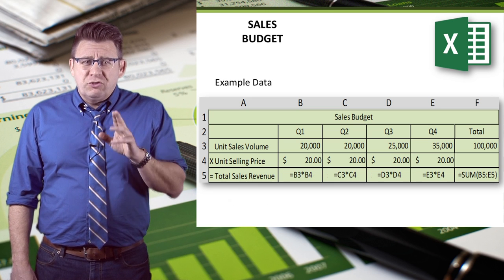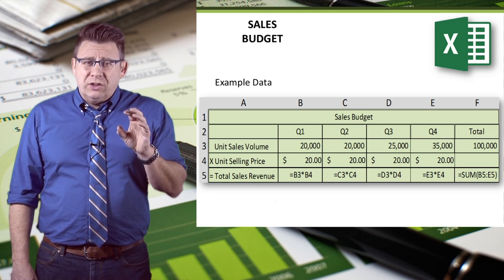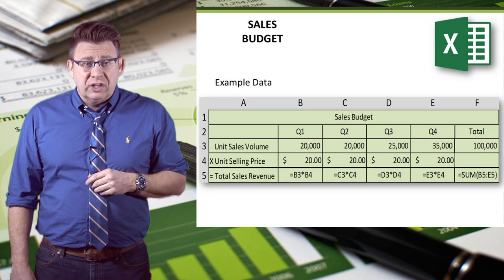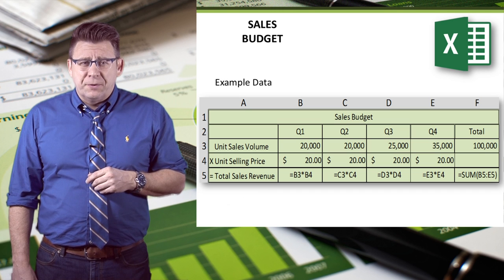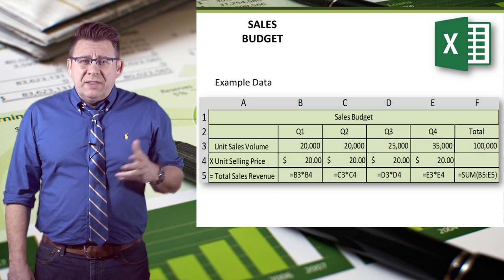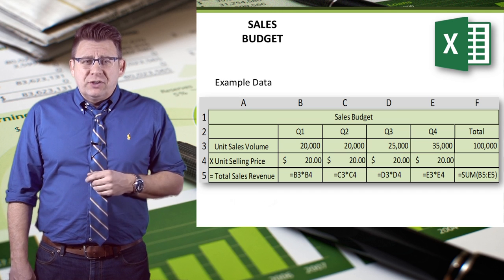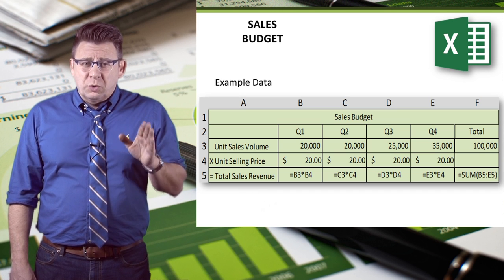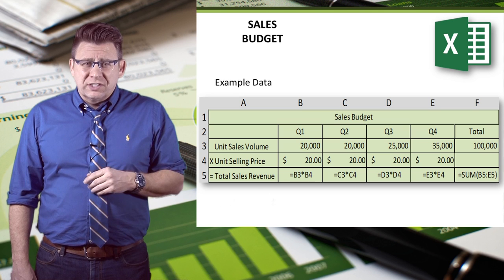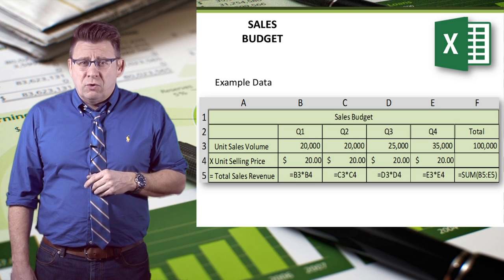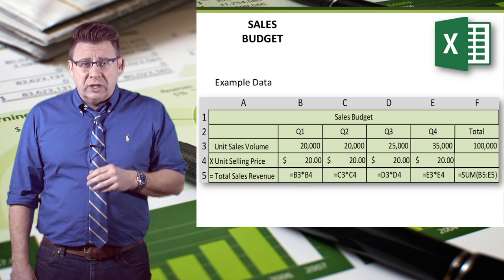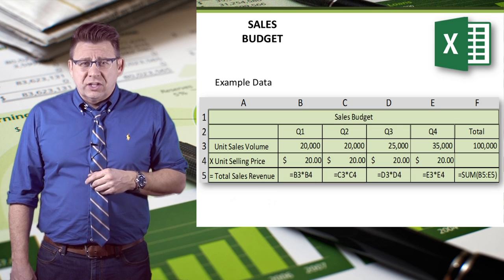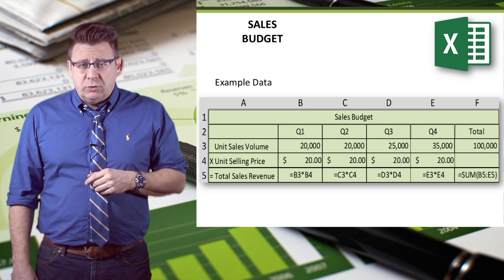I'll be showing you how to use basic Excel functions to link budgets together. In this example, you can see the formulas used to arrive at total sales revenue by quarter and annually, as well as the total sales volume annually.